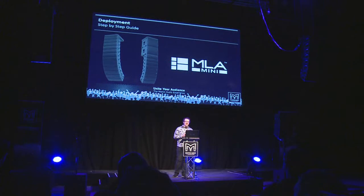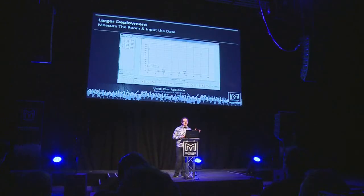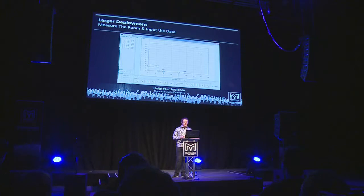Now I'll show you how easy it is to get the results you've just experienced. These are screenshots taken from Display 2.1 in the configuration of the system that you heard a few minutes ago. First of all, you measure a 2D slice of the room using a laser tape measure — a very simply shaped room like this took me about two minutes. Then you position the array within the room, tell it where the audience starts and where it stops, and move on to the next stage.